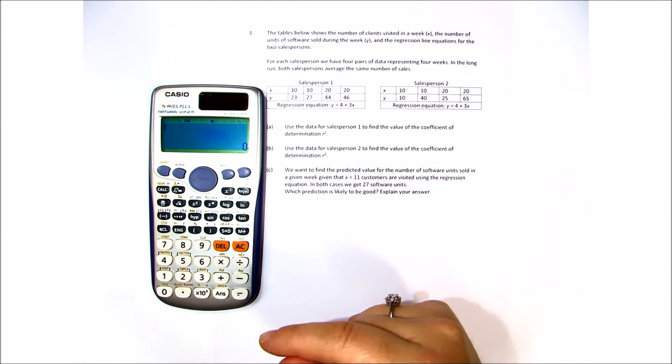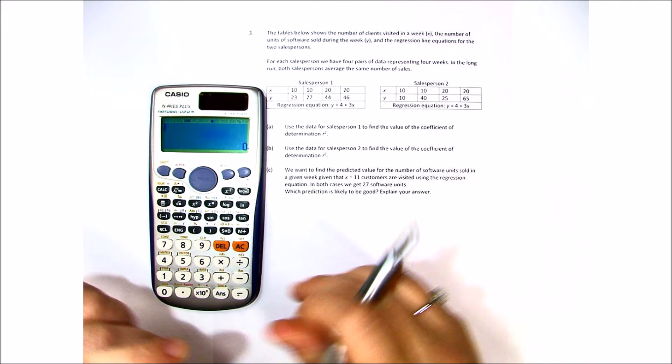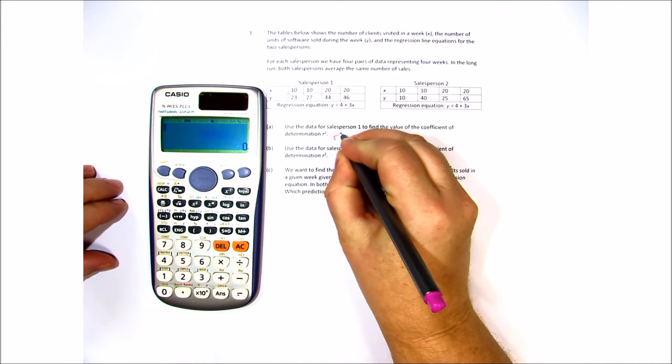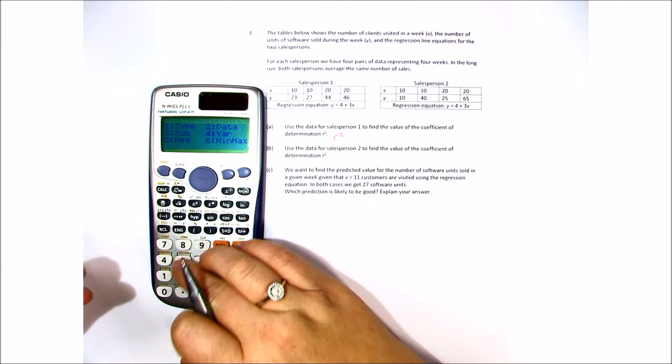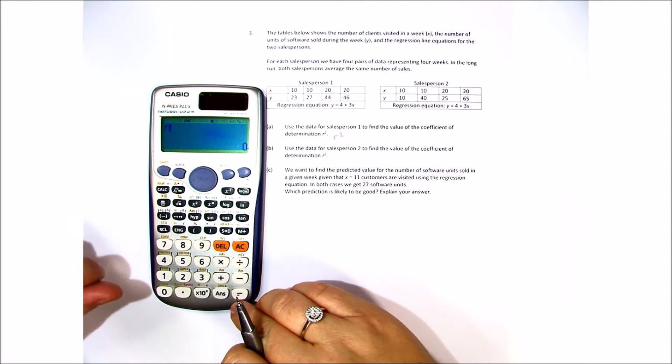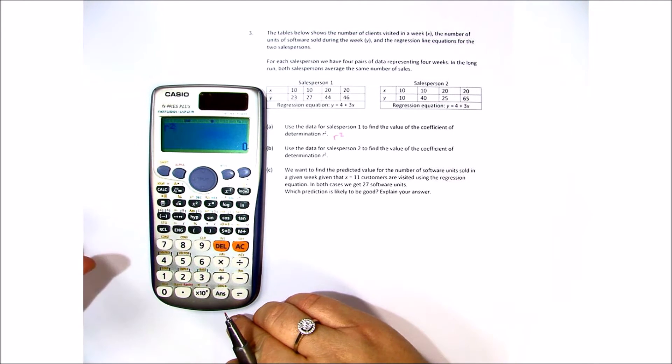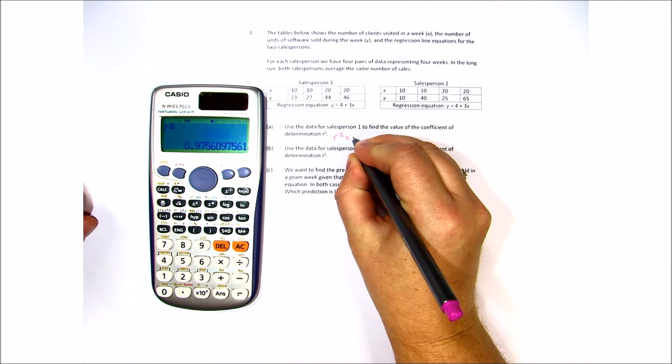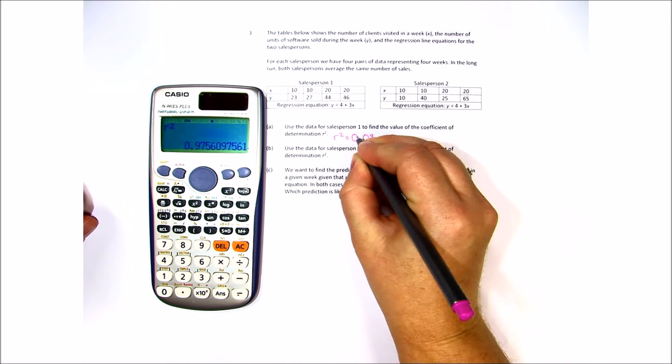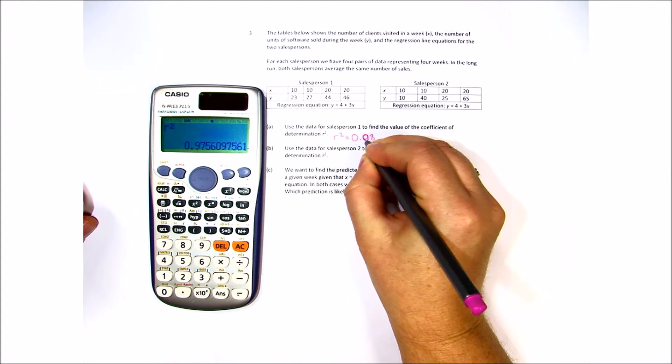So we're looking specifically for r squared and this is sales person 1. So to find r squared we have to do shift 1 and then we go into regression. We can only find r so in order to find r squared we have to hit the squared button. We find r squared is a very high 0.98.